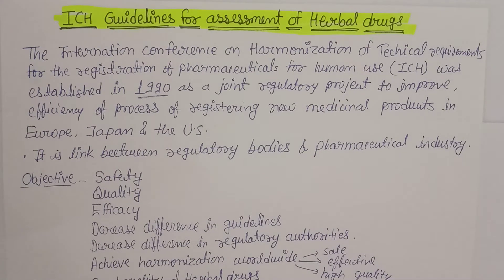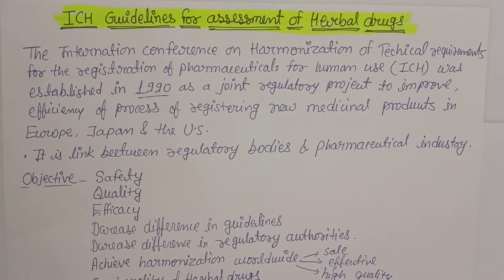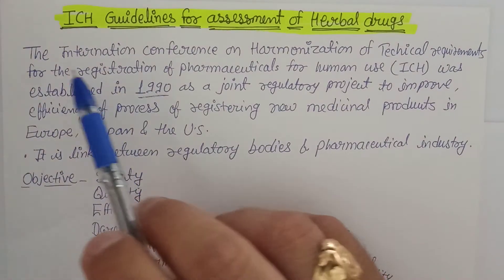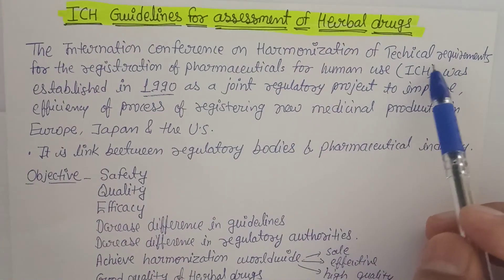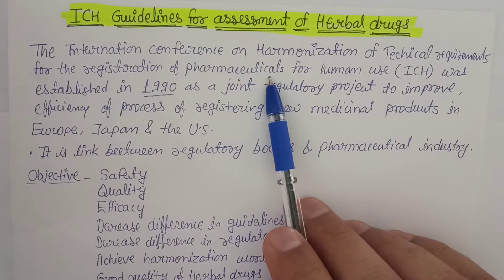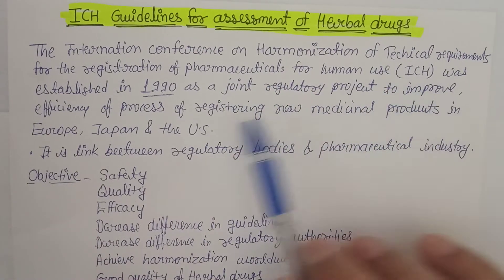We are going to discuss the ICH guidelines for assessment of herbal drugs. In the last video we discussed WHO guidelines for herbal drugs. ICH stands for International Conference on Harmonization of Technical Requirements for the Registration of Pharmaceuticals for Human Use.